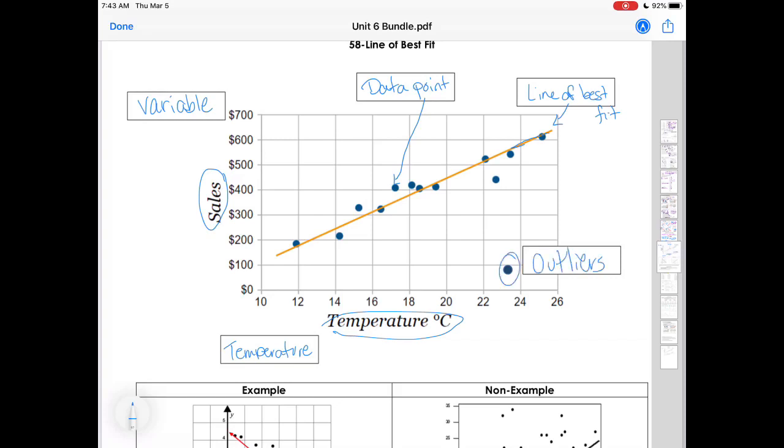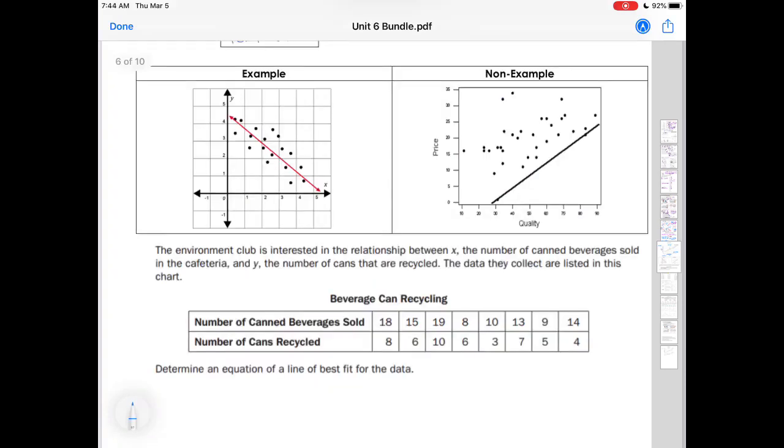Our last one is outliers. Outliers are the little things all by themselves that are like the odd one out. So here are examples, an example of a line of best fit. Notice it goes pretty much through the center of my points where a non-example doesn't really go through the majority of points.